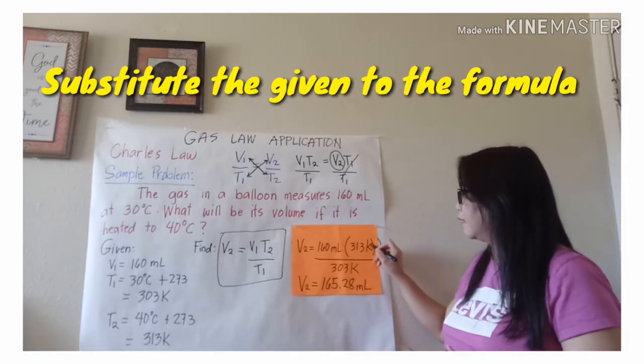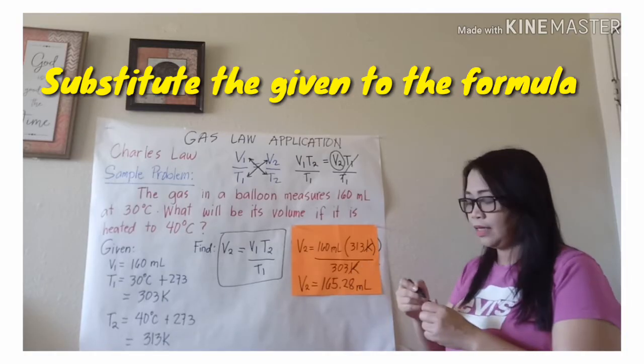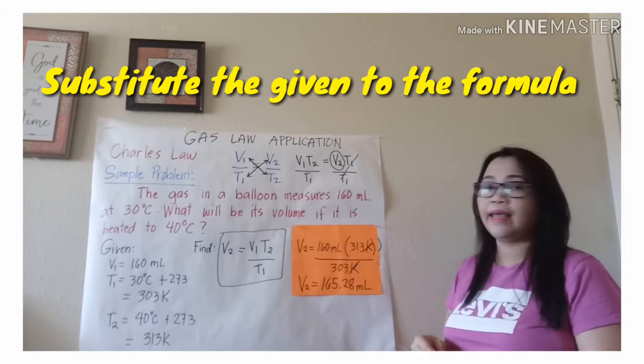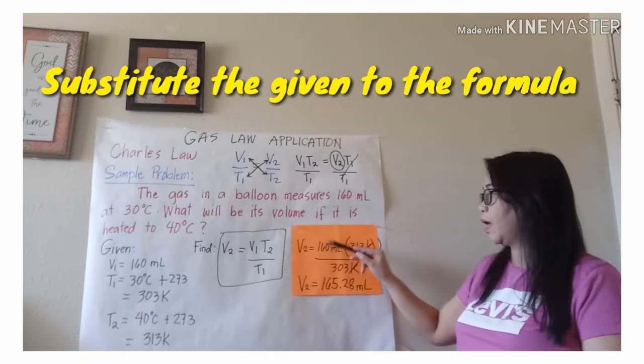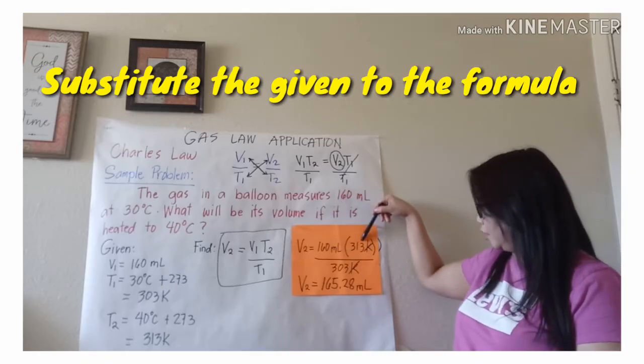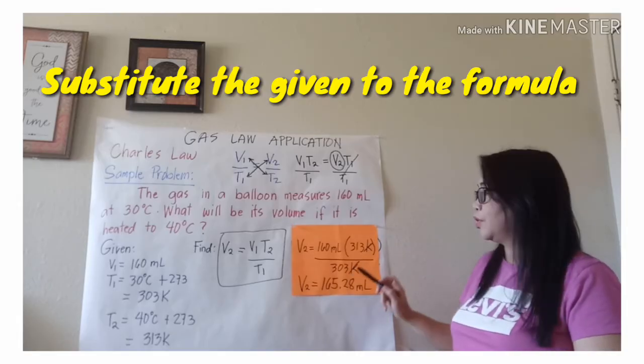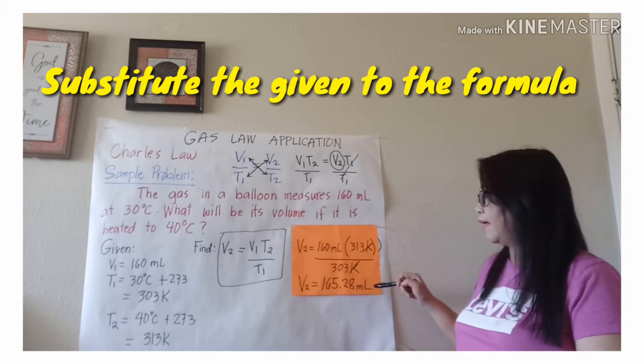And we're going to cancel out Kelvin here, cancel out. So the remaining unit is ml. And the next thing that you're going to do is multiply 160 to 313 and then divided by 303. You will get final volume, which is 165.28 ml. All right.